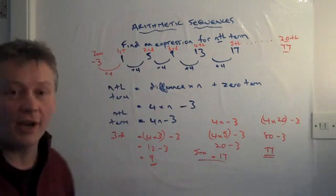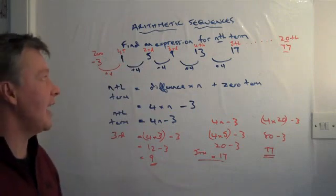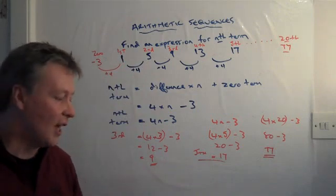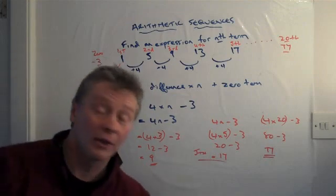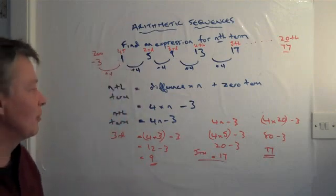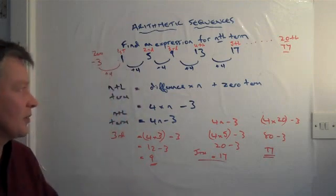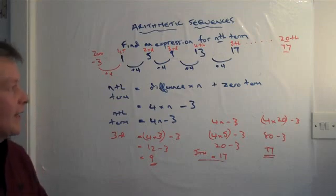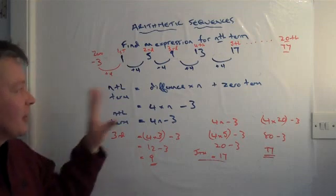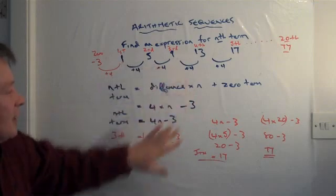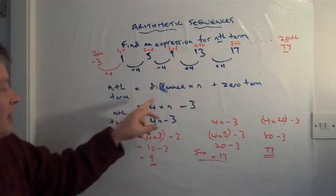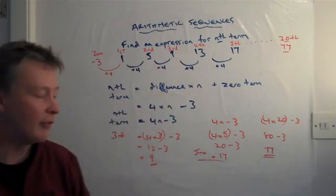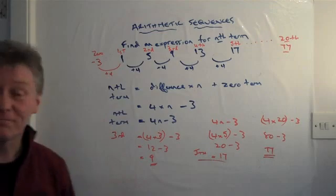So that's how to work out the formula for the nth term for arithmetic sequences. It's around about a grade C question, probably worth about two marks. I hope that's helpful. There is a formula you can use that's exactly the same as this — we just use slightly different numbers — but it means exactly the same thing. And that's how to do it.